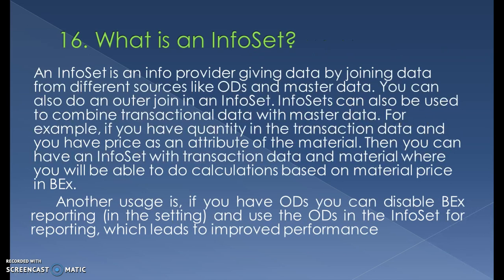What exactly is an infoset? An infoset is an info provider that gives data by joining data from different sources like DSOs and master data. You can also do an auto join in an infoset. Infosets can also be used to combine transactional data with master data — for example, if you have quantity in transaction data and price on the attributes of the material.